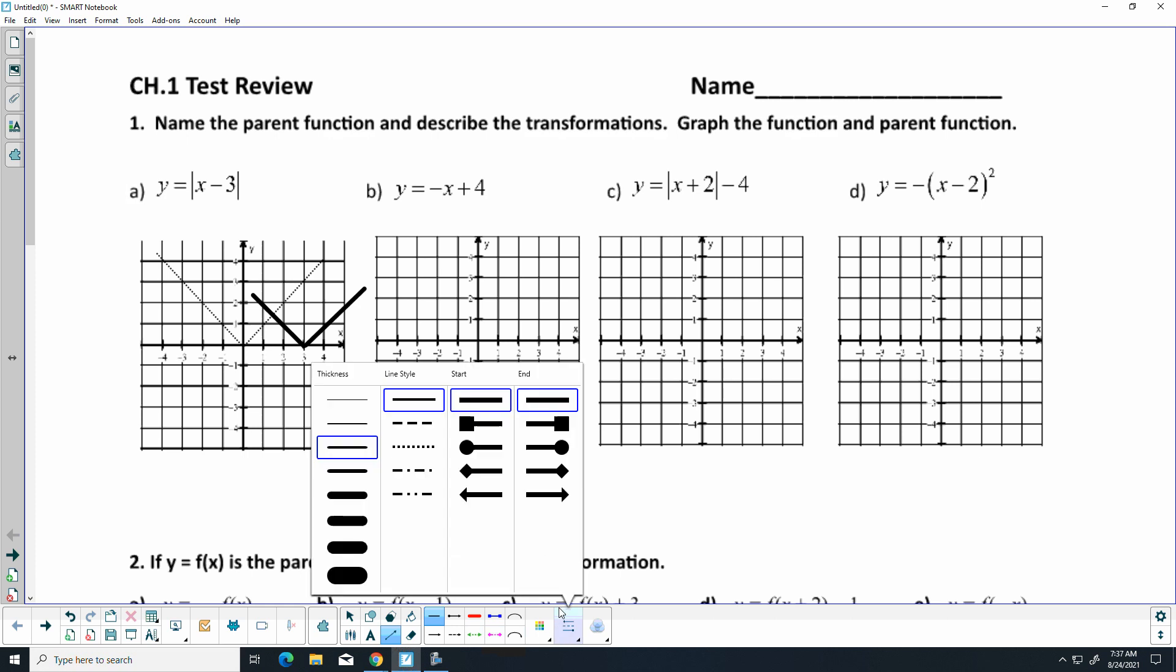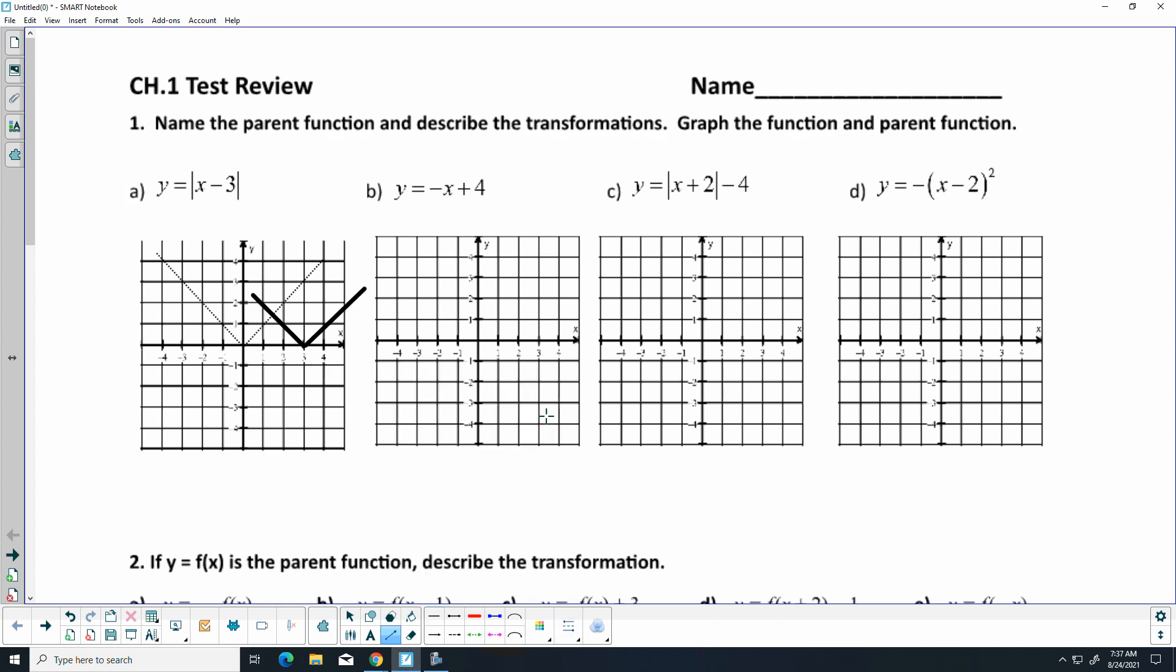On B, we have a line that is reflected and shifted to the right 4. Actually, I don't usually pay too much attention to that. I just graph it as a regular line, and you should get something like that.